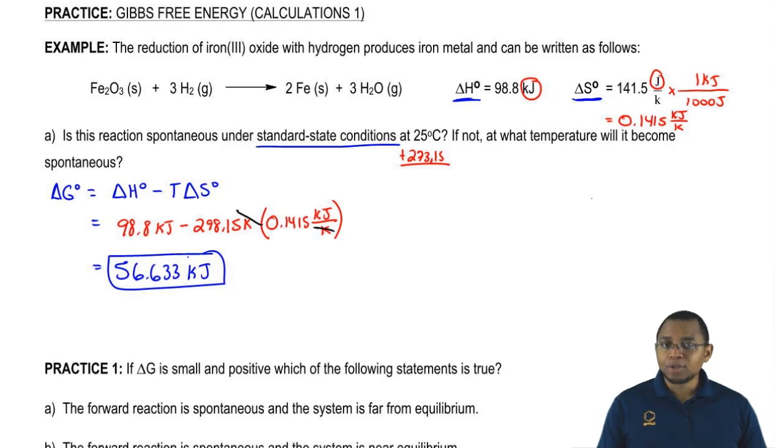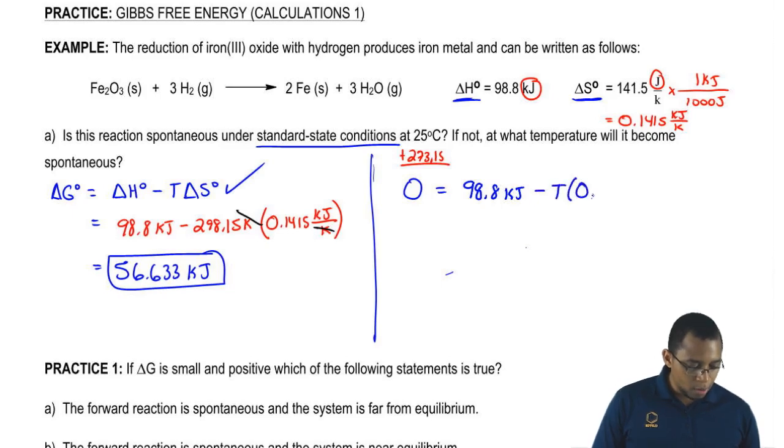Now it's up to us to figure out what temperature will it become spontaneous. Anytime they ask you at what temperature does it become spontaneous, that means you assume that delta G zero is equal to zero. We're going to use this same exact equation here except now delta G is zero. And that still equals the same value for delta H, the same value for delta S. Here we're not going to know what temperature is. That's what we're trying to solve. So zero equals 98.8 kilojoules minus T times 0.1415 kilojoules over K.